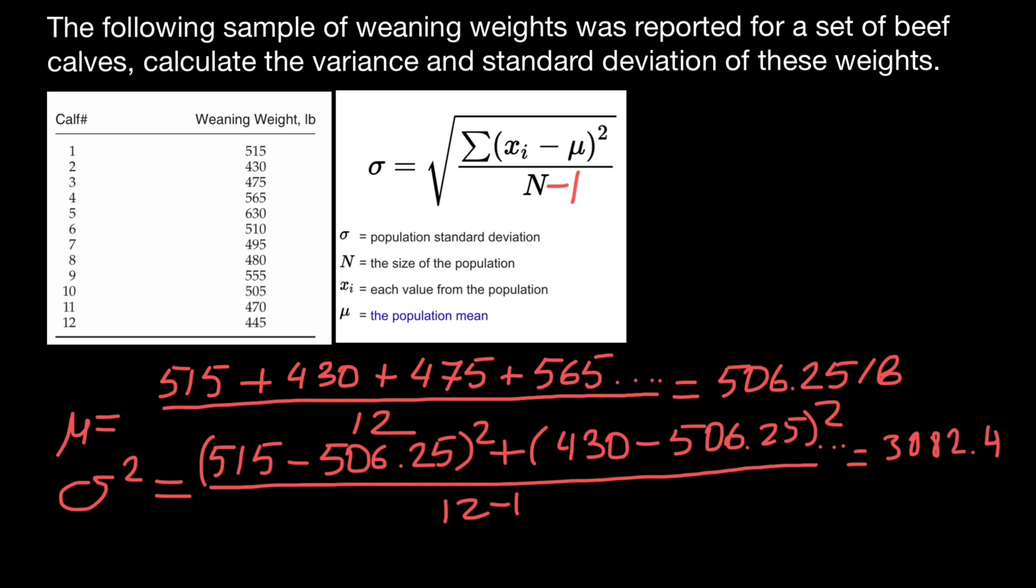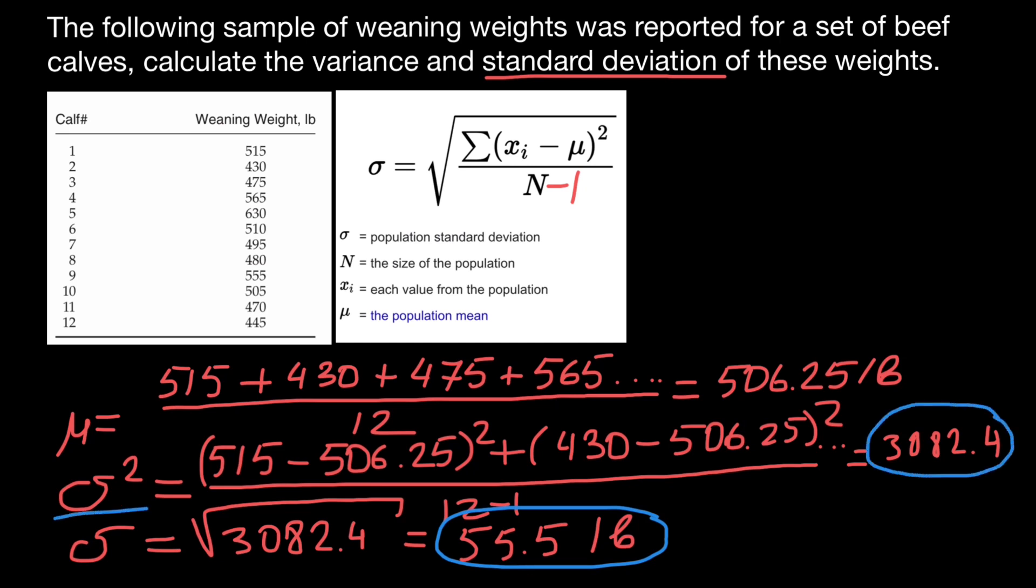This is the variance. In order to find standard deviation, we just have to take the square root of the variance. Sigma stands for standard deviation, and we take the square root of 3082.4. We get 55.5 pounds. This is the standard deviation from the mean of the population. Sigma squared is variance and sigma is standard deviation.